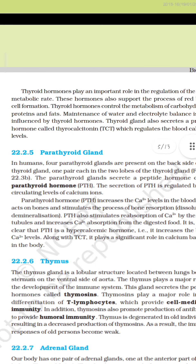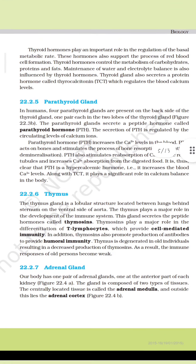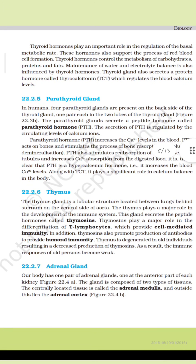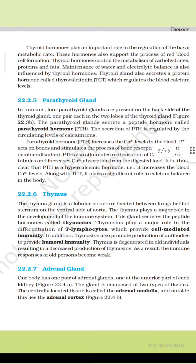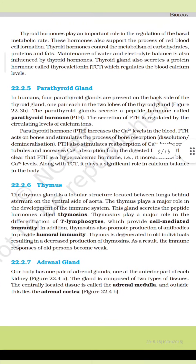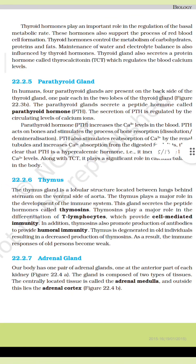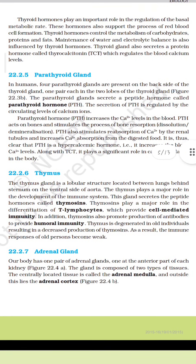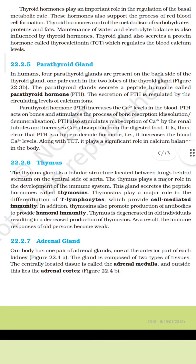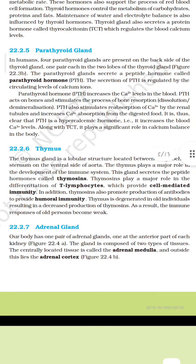Thyroid hormones play an important role in regulation of the basal metabolic rate. These hormones also support the process of red blood cell formation and control the metabolism of carbohydrates, proteins and fats. Maintenance of water and electrolyte balance is also influenced by thyroid hormones. The thyroid gland also secretes a protein hormone called thyrocalcitonin (TCT), which regulates blood calcium levels.